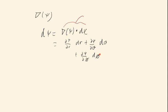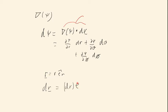So let's try and find dr. In spherical coordinates, r takes the form R times e_r — we are basically pointing to a point on the curve from the origin. So dr equals dr times e_r, where r is the magnitude of r, plus r times d(e_r).